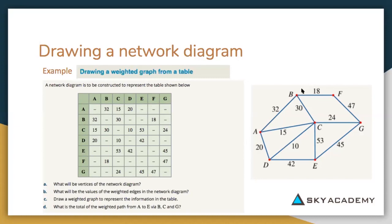From B to A we already have 32. B to C has a value of 30, and B has one final edge of 18 going to F. So B has a degree of three, going to A, C, and F. C is different — C has a degree of five, with five edges coming out of it. C goes to A with 15, C to B with 30, C to D with 10, C to E with 53, and C to G with 24.